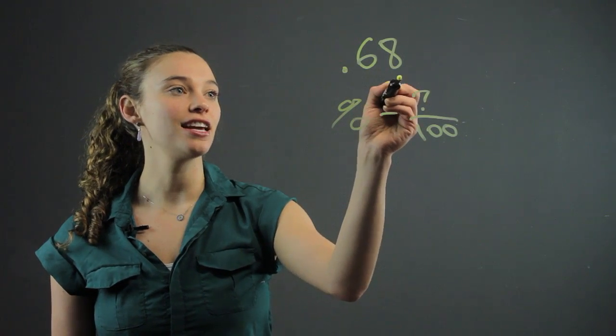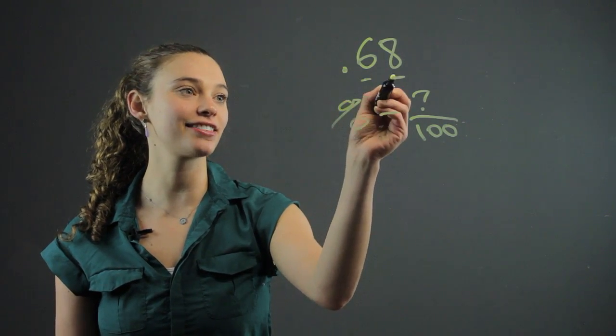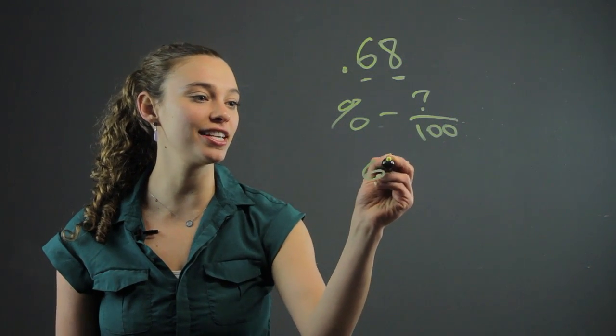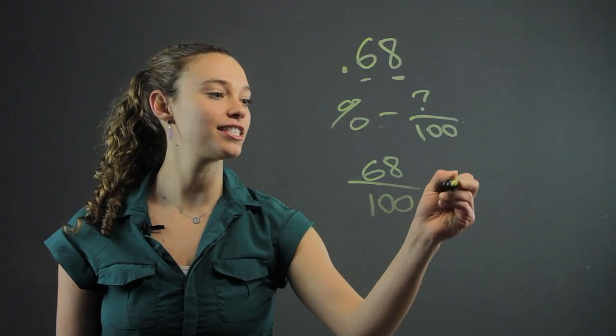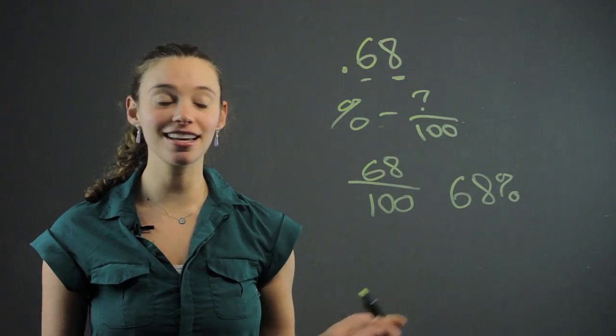So 0.68, this is the hundredths place in decimals. This is the tenths and this is the hundredths. So this as a fraction, we can just write as 68 over 100, which means it's just 68%.